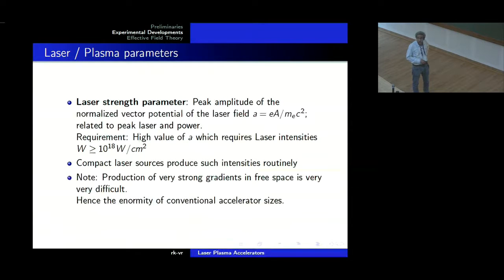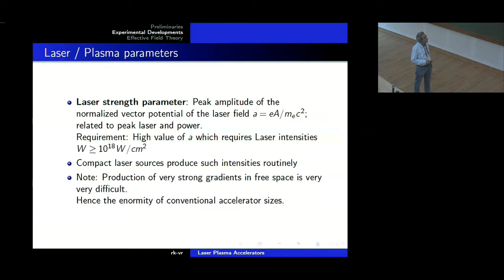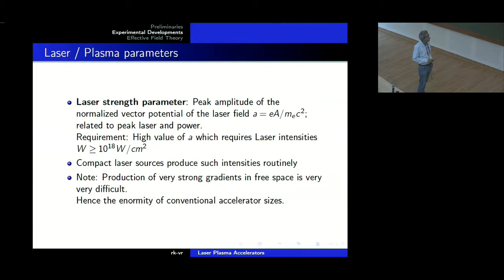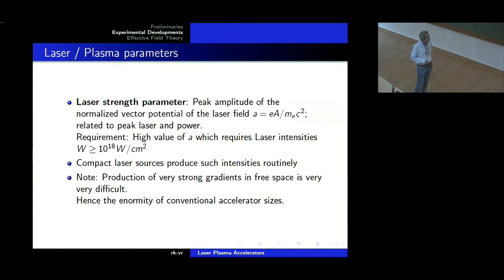We need some parameters in order to appreciate the physics. The peak amplitude of the normalized vector potential — basically looking at field energy against rest mass energy — is related to peak laser power. We need a high value. Laser intensities will be of the order of 10 to the power of 18 watts per centimeter squared, which compact laser sources produce. Production of very strong gradients in free space is very, very difficult, and hence the enormity of conventional accelerator size.